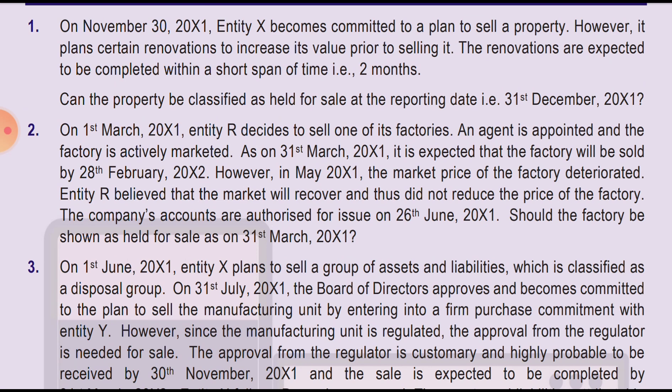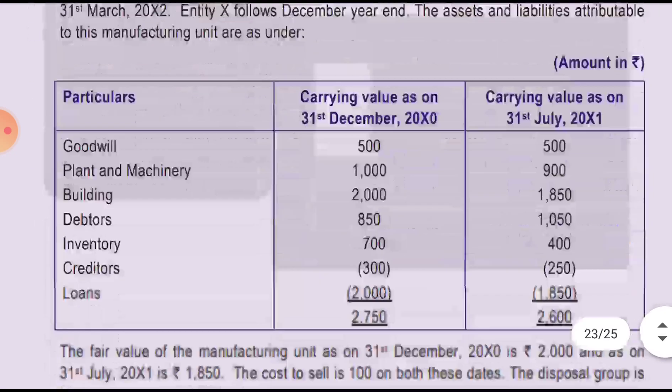However, in May 2001, the market price of the factory deteriorates. The entity believes the market will recover and thus will not reduce the price of the factory. The company accounts are authorized for issue on 26th June. Should the factory be accounted as held for sale as on 31st March? Yes, it will be accounted as held for sale, because before the closing date there wasn't any such event — the deterioration occurred after the balance sheet date.